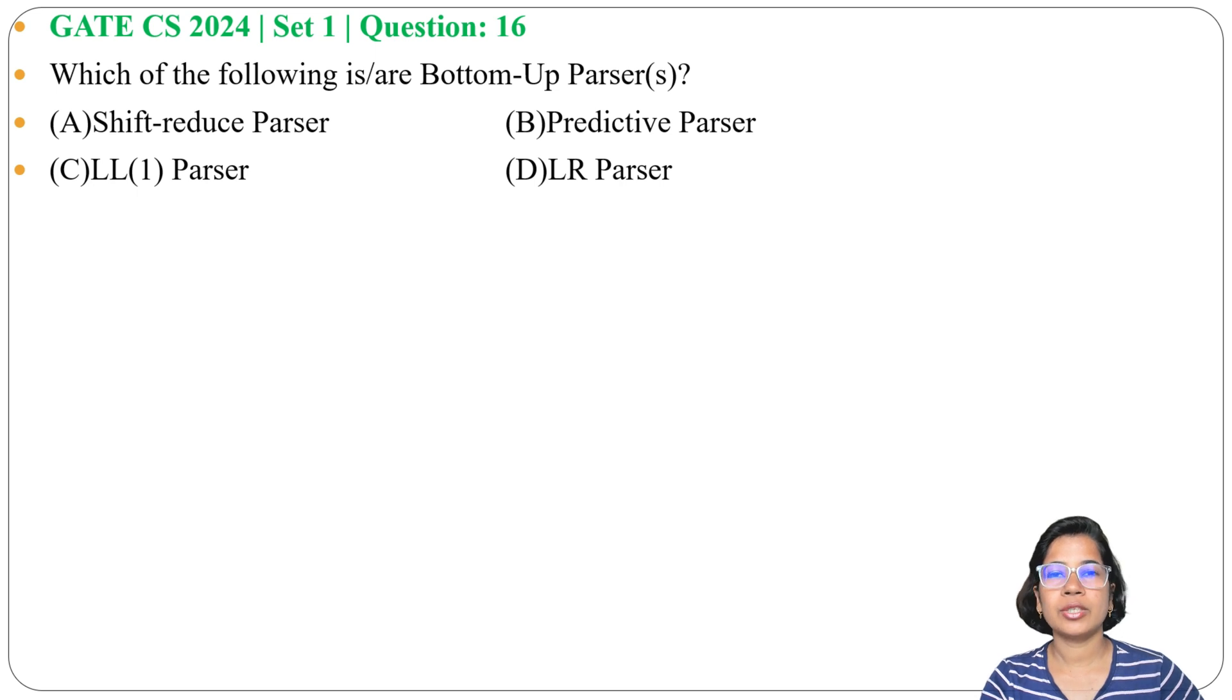There are two types of parsers: one is top-down parser and another is bottom-up parser. Again, there are different types of bottom-up parsers like shift-reduce parsing, operator parsing, and LR parsing. In top-down, there's LL1 parsing and predictive parsing.